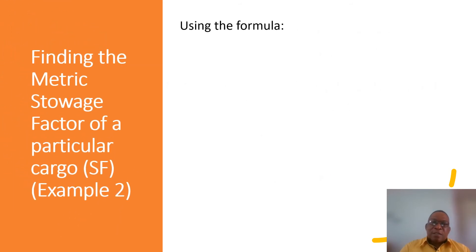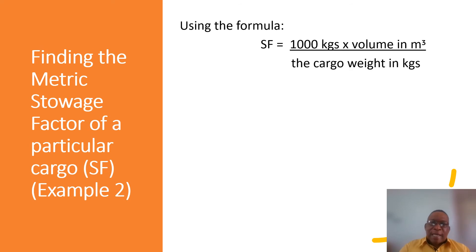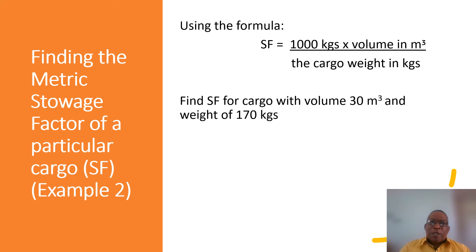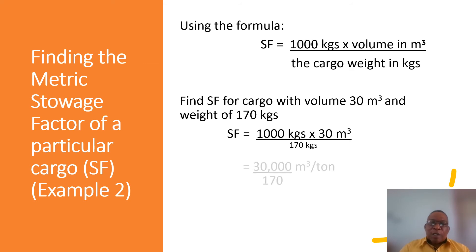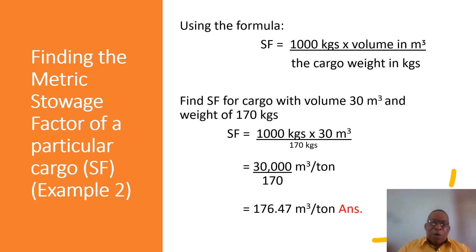Let's look at example two, utilizing the same formula, with the following information: a volume of 30 cubic meters and a weight of 170 kilograms. Plugging those values into the formula: 1000 kg × 30 m³ ÷ 170 kg gives us 30,000 divided by 170, resulting in 176.47 cubic meters per ton.